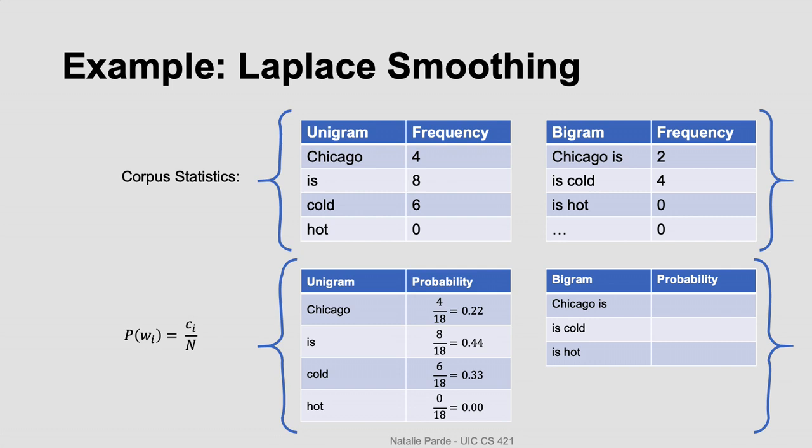If we just compute our regular n-gram probabilities without any smoothing for the unigrams in our corpus, we get the values you see here. The value n refers to the total number of unigram occurrences, not the number of unique vocabulary words. So we have four occurrences of Chicago plus eight occurrences of is plus six occurrences of cold plus zero occurrences of hot for a total of 18. The probability for the unigrams in Chicago is then its individual count divided by n, 18, for a result of 0.22. We compute probabilities for the other three unigrams and find respective probabilities of 0.44, 0.33 and 0.00.